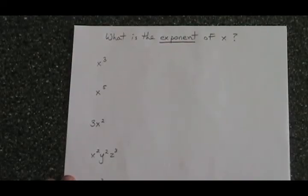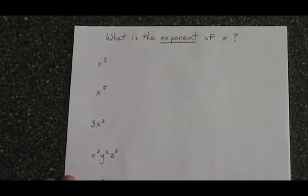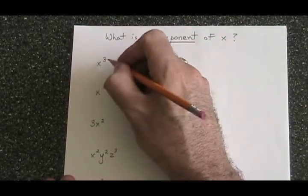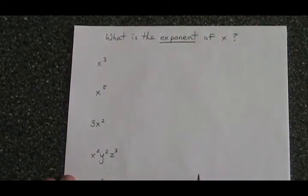In polynomials, we have to be able to identify the exponent of a variable. The exponent is the small number above and to the right of the letter that makes our variable.